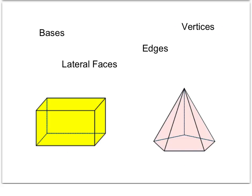Vertices are the points where the edges connect — think of them as the pointy pieces. A pentagonal pyramid has six vertices, counting the top one, and a rectangular prism has eight vertices: four on top and four on the bottom. Lastly, lateral faces are any faces that are not a base. On a pentagonal pyramid, the pentagon is the base, and the five triangles around it are the lateral faces.